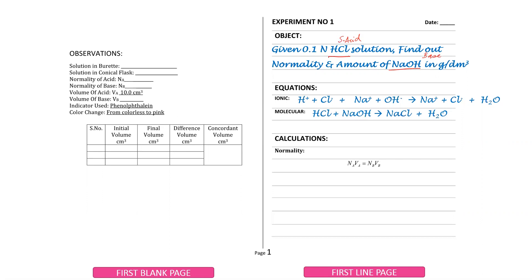This is a strong acid and a strong base, which means this is acid-base titration 1. The indicator to be used is phenolphthalein. When phenolphthalein is used as an indicator, you will write the base in the burette.